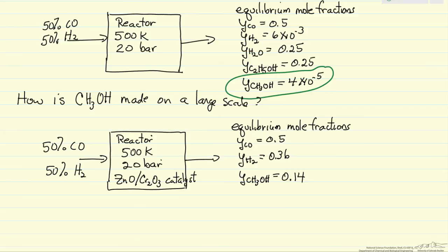Here, same reaction conditions and same feed, but if I do the equilibrium calculation only considering the reaction to make methanol, now you see that we have a methanol mole fraction that's reasonable, more than three orders of magnitude higher than the case where we have both reactions in our calculation.